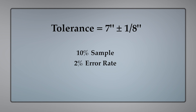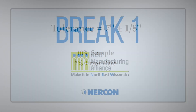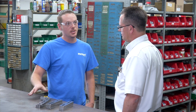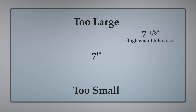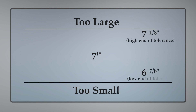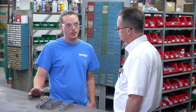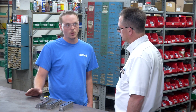Let's find the high and low end of the tolerance and draw it out. The bracket is supposed to be seven inches long, so at the high end of the tolerance it'd be seven and an eighth inches, and any parts longer than seven and an eighth would be too long. At the low end of the tolerance the bracket could be six and seven eighths inches and still work. So if the bracket is shorter than six and seven eighths inches or longer than seven and an eighth inches, it won't work.